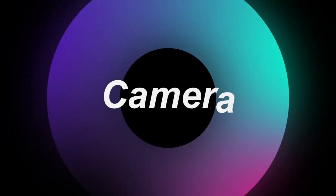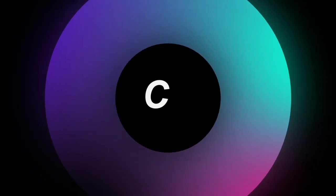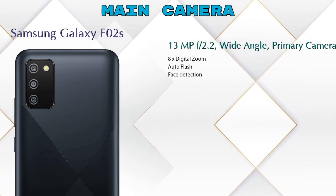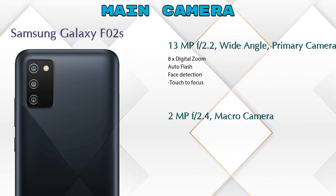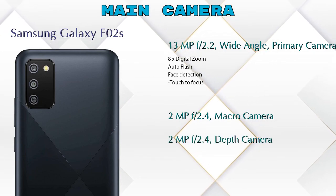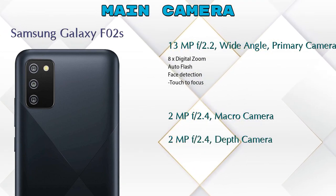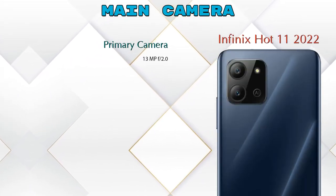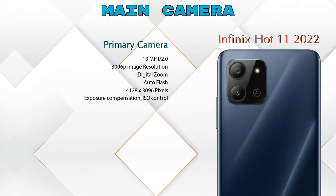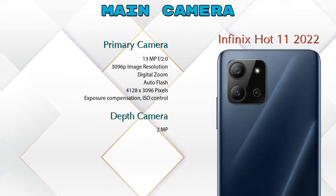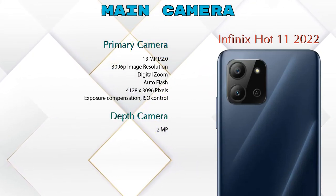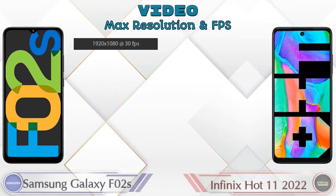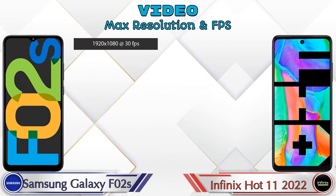Now let's talk about the camera. For the rear camera, the F02s has three cameras: a 13MP f/2.2 wide-angle primary camera, a 2MP f/2.4 macro camera, and a 2MP f/2.4 depth camera. The Hot 11 2022 has two cameras: a primary camera and a depth camera.